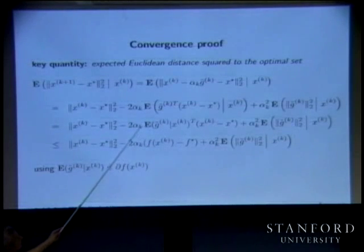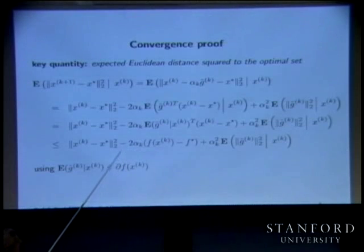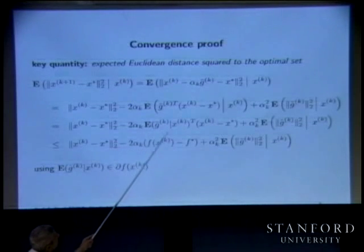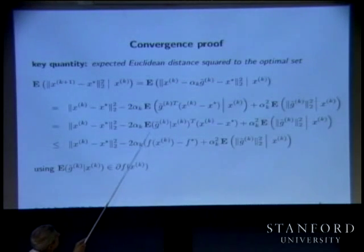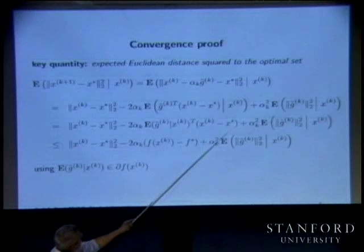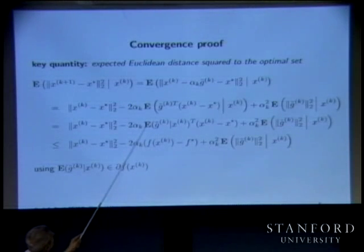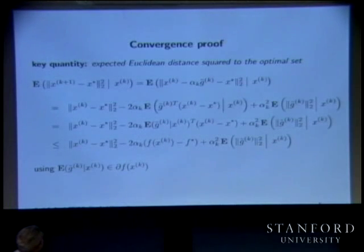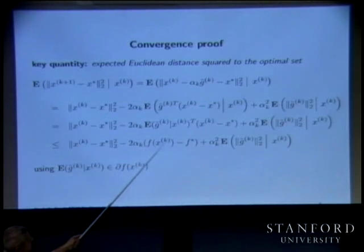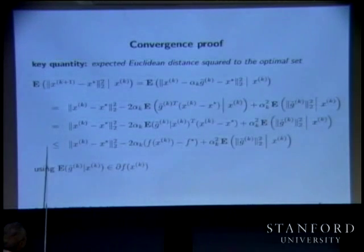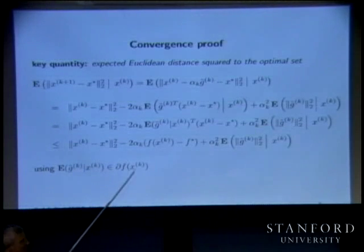The definition of being a stochastic subgradient is that this conditional expectation of g-tilde satisfies the appropriate subgradient inequality — so that's how that works, and you end up with this inequality. Now if you go back and look at the proof of the subgradient method, it looks the same, except there are conditional expectations around.